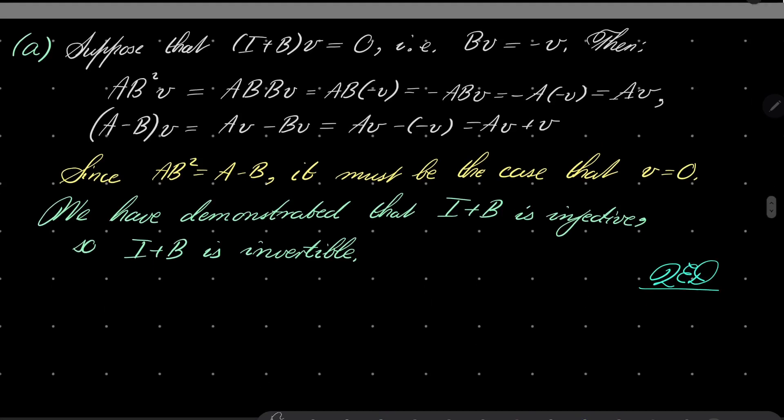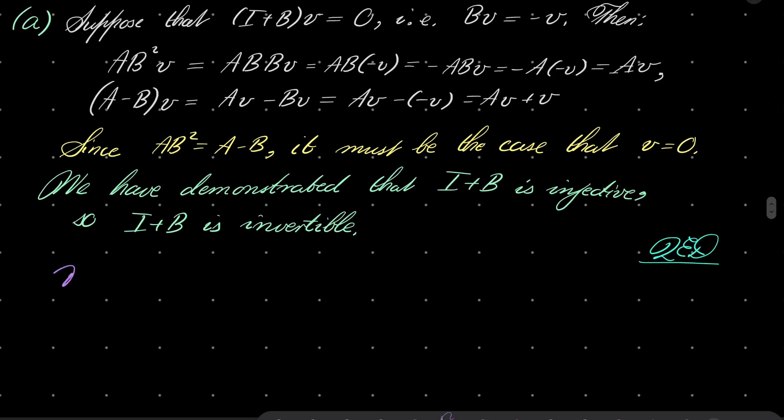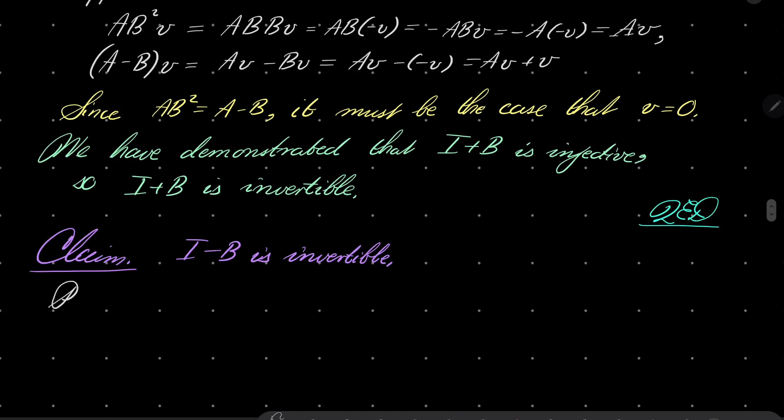But I will show one more thing. My second claim, proof is very similar. I claim that I minus B is also invertible. Proof is very simple. Suppose that I minus B times some vector is zero, which means BV equals V.